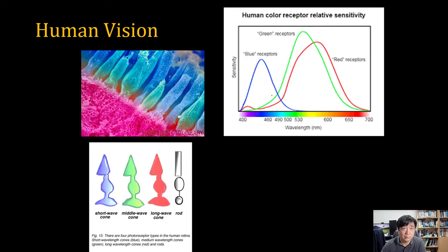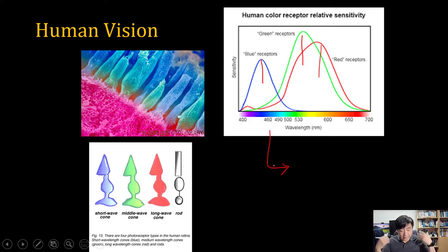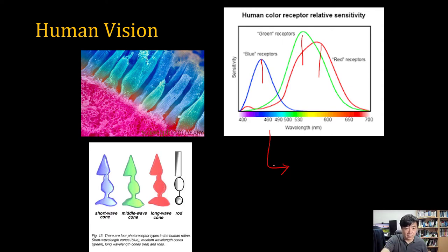For example, one is for blue, one is for green, and one is for red. The combination of sensing values is processed in our brain, and then we decide what color something is — we decide color by processing these three kinds of signals.